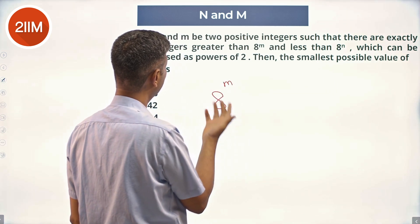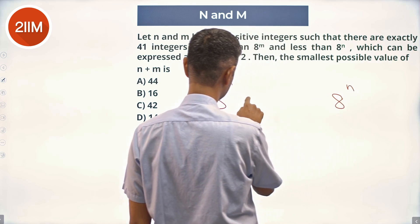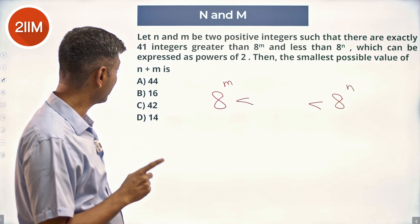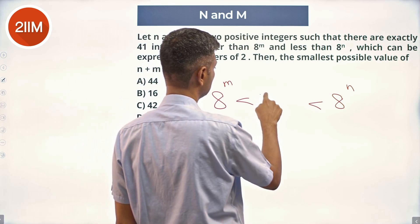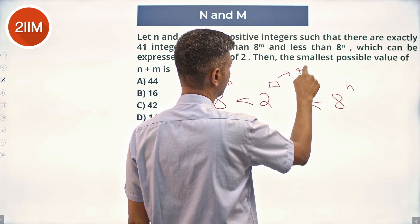8^m and 8^n - so 41 integers that can be expressed as powers of 2. So this is 2^something, 41 different values.